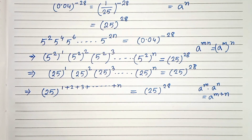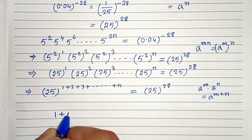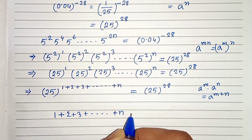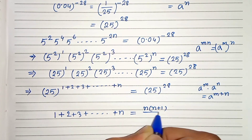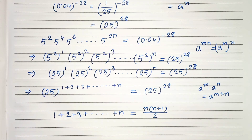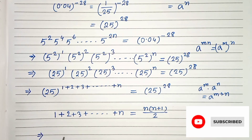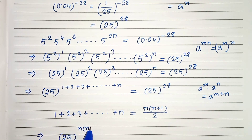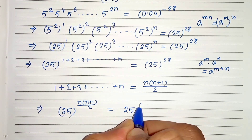Again, we know that the sum of n natural numbers — 1 plus 2 plus 3 plus dot dot dot plus n — can be written as n times n plus 1 divided by 2. This is the sum of n natural numbers. So replacing this, we can write 25 whole to the power n times n plus 1 by 2 equals 25 whole to the power 28.